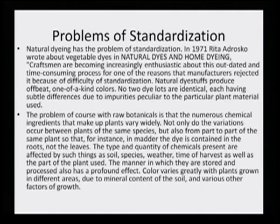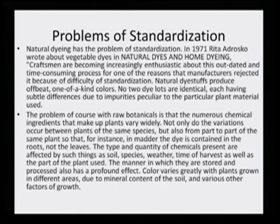Not only do variations occur between plants of the same species, but also from part to part of the same plant. For instance, in madder the dye is contained in the roots and not so much in the leaves. The type and quantity of chemicals present are affected by such things as soil, species, weather, time of harvest, as well as the part of the plant being used. The manner in which they are stored and processed also has a profound effect.